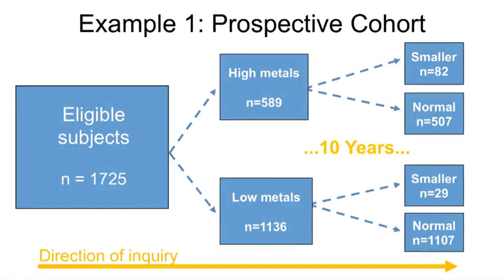This is a diagram of the cohort study. We start with a cohort of children ages 5 years old who are working on recycling electronics, with an N equal to 1,725. Then we measure the concentrations of the metals in their blood at baseline. Based on their blood concentrations, we classify them into children with high metal concentrations, where their N equals 589, and low metal concentrations, where the number is 1,136.